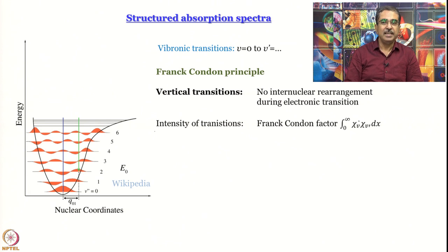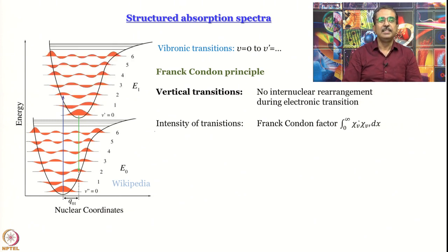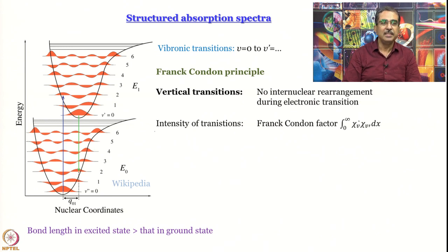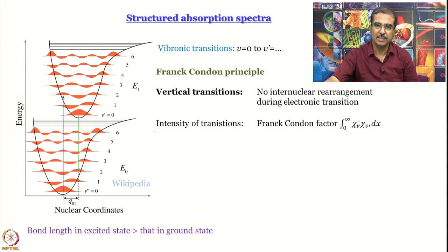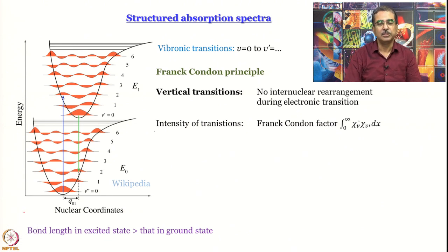The Frank-Condon factor is the integral of the product of the vibrational wave function from which the transition originates and the vibrational wave function of the level to which the transition goes. Essentially it is a numerical integration — you multiply the two functions for a given value of nuclear coordinate and add them up, finding the area under the curve. All upward transitions start at the equilibrium bond length because for v=0, that is where the maximum of ψ is, meaning maximum probability of finding the molecule.